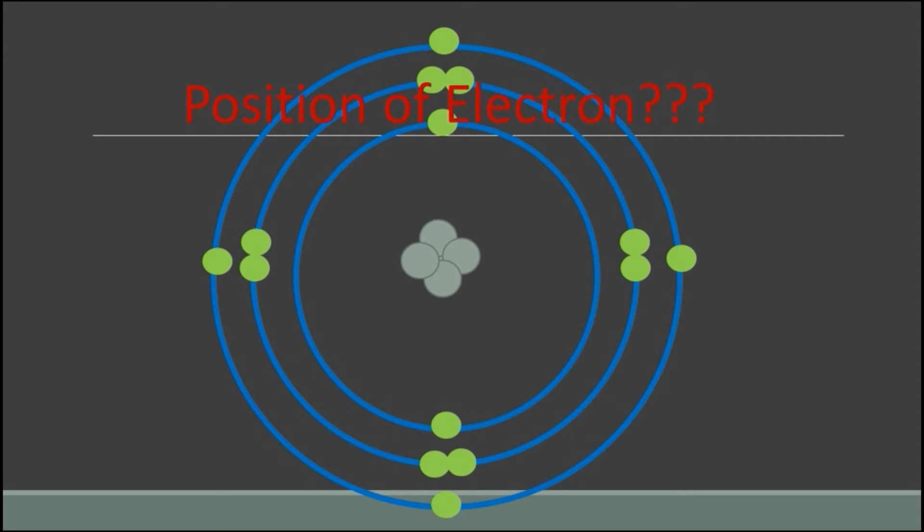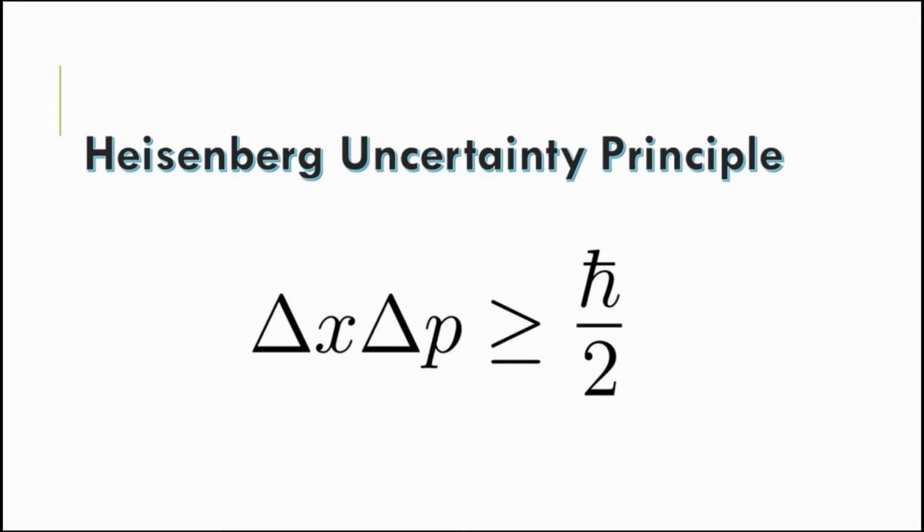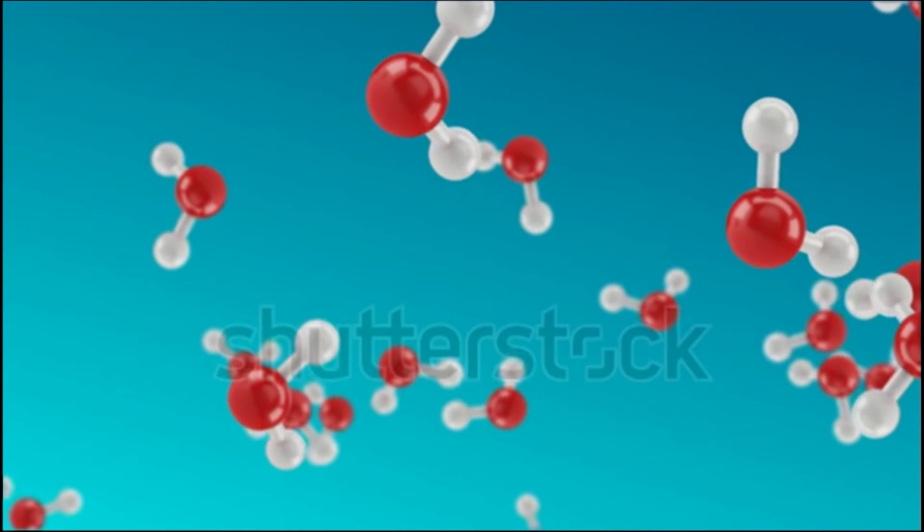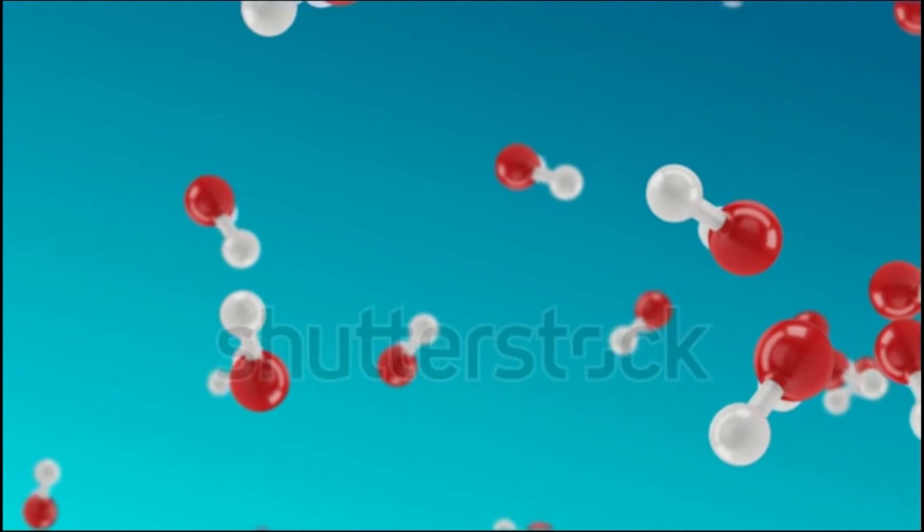We do not know where the electron is or what the electron position is exactly. This is the reason given by Heisenberg's uncertainty principle. An atom will have a different radius based on the bond it forms.